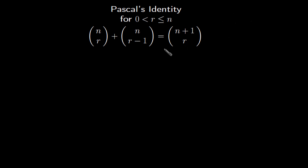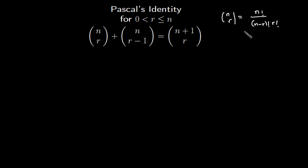Now for us to prove this identity, you remember that by definition, n combination r is n factorial over n minus r factorial times r factorial, and n factorial itself is the product of n times n minus one times n minus two down to one.